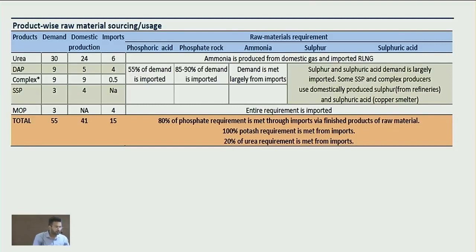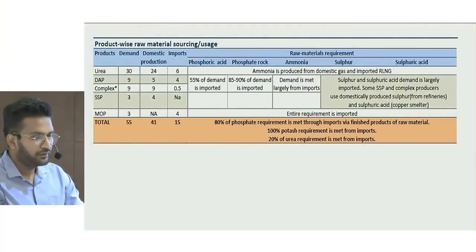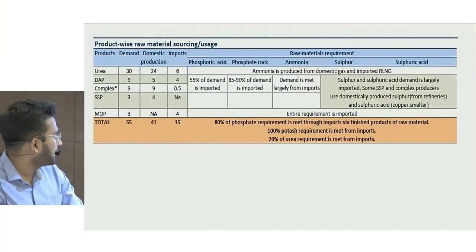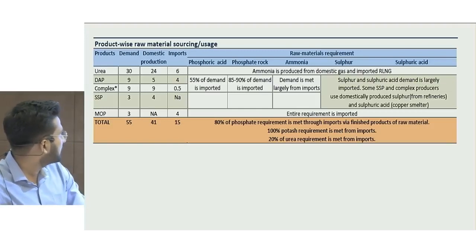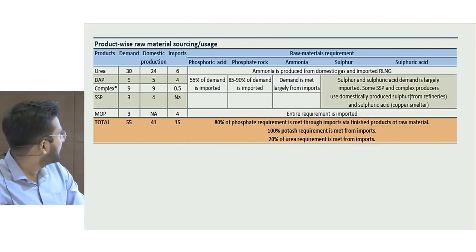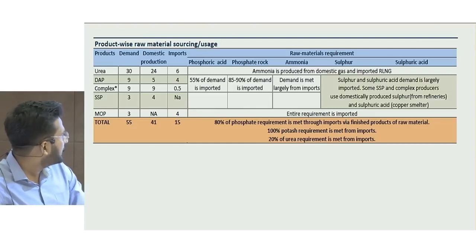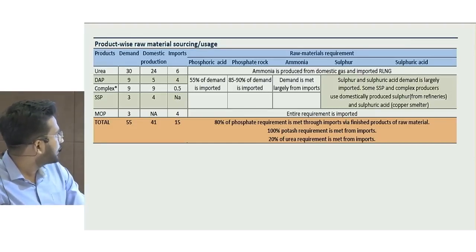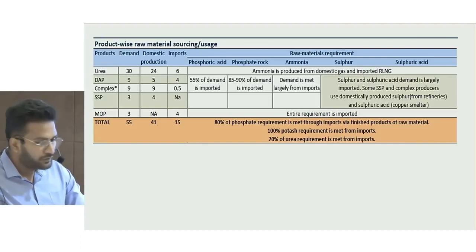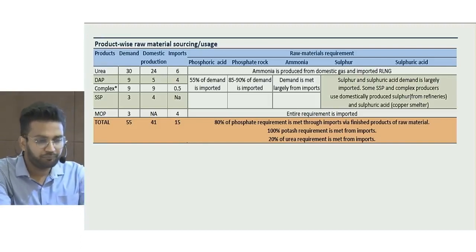Natural gas is a major raw material component for both urea and non-urea, roughly 70% of the fertilizer cost, and is imported by India. For non-urea fertilizers, India imports around 55% of phosphoric acid demand, while ammonia is also imported, and phosphate rock meets 80-90% of demand through imports. So most of the raw material requirements are being met through imports from various geographies.